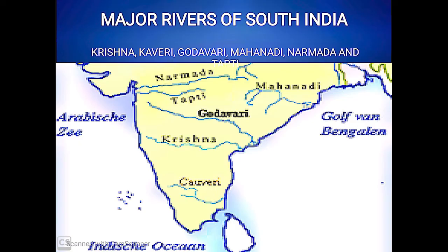Now we will talk about the main rivers of South India. Here we see the major rivers of South India. These are Krishna, Kaveri, Godavari, Mahanadi, Narmada, and Tapti. Godavari is the largest river of South India.